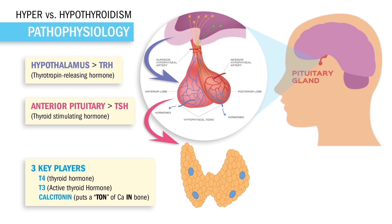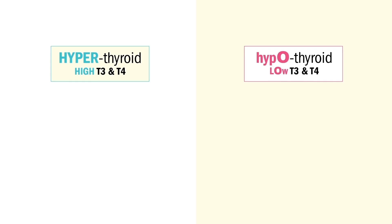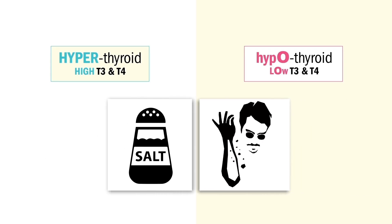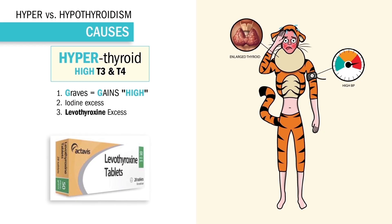Our thyroid hormones T3 and T4 are the main focus for thyroid conditions. In hypo, we have low T3 and T4; in hyper, we have high T3 and T4. Your body needs dietary iodine found in salt, so iodine deficiency is a major cause of hypothyroidism in developing countries. The number one cause of hyperthyroidism is the autoimmune disease Graves' disease. Too much iodine also means too much thyroid hormone. And if we give hypothyroid patients too much levothyroxine, we can eventually cause a hyper condition.